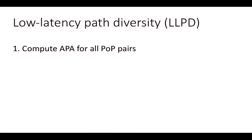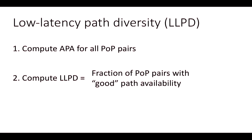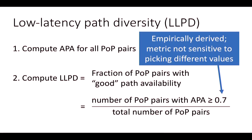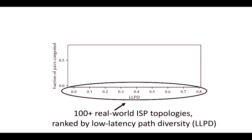To condense this to a single metric for the entire topology, we compute APA for all POP pairs, then compute the fraction of POP pairs with APA more than 0.7—our threshold, empirically derived. This is our Low Latency Path Diversity (LLPD) metric, and it is not very sensitive to picking different threshold values. We now take more than 100 real-world ISP topologies and rank them: on the left are those with low path diversity, and on the right are those with high path diversity. On the y-axis, we generate traffic matrices for each topology and plot the fraction of source-destination POP pairs that cross at least one congested link.